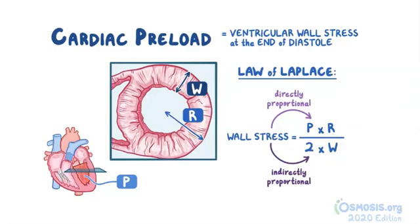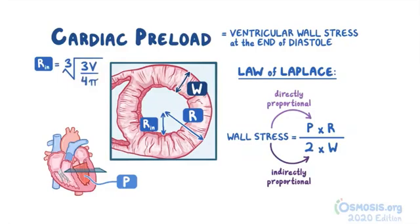The radius (r) comprises an inner radius (rin), which is the radius of the ventricular cavity, plus the ventricular wall thickness. The inner radius is calculated as: rin equals the cube root of (3 times v over 4 times pi), or equivalently (3v / 4π)^(1/3), where v is the volume of the left ventricle at the end of diastole. Adding wall thickness to rin gives the full left ventricular end-diastolic radius, r.